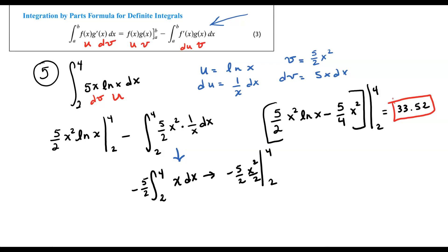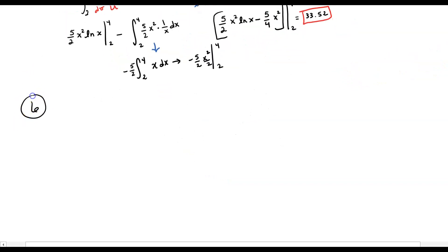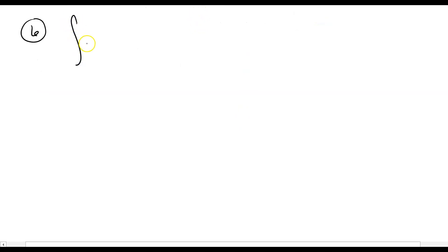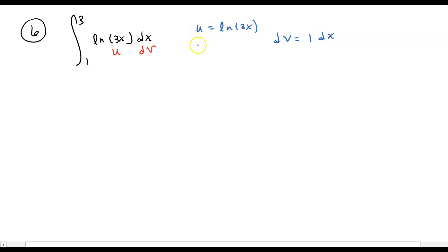Let's go ahead and take a look at another example. On example number 6, we're going to take the integral from 1 to 3 of the natural log of 3x dx. This right here represents my u, and my dv is actually dx. So u equals the natural log of 3x and dv is 1 dx, which will make this one a little bit easier to integrate.